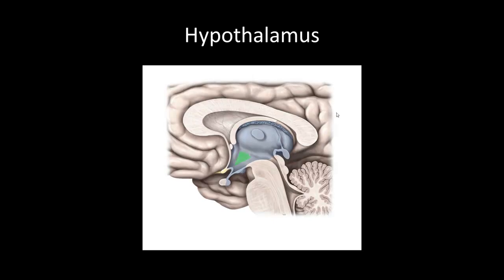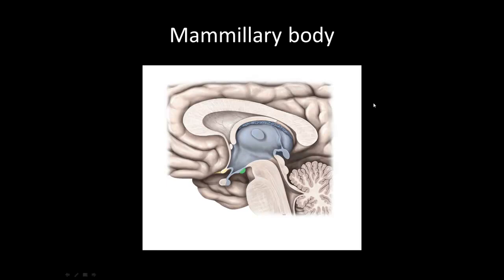Next is the hypothalamus — the inferior-most portion of the diencephalon with endocrine and autonomic function. The mammillary body is this little bulb projection, also part of the limbic system. Recall the limbic system mnemonic — the 5 F's: feeding, fleeing, fighting, feeling, and fornication.